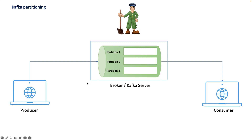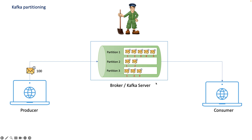In the Kafka ecosystem, once a producer sends bulk messages, they will be split into different partitions. If I send thousands of messages, each message is not guaranteed to go to the same partition — it will go to multiple partitions, depending on the number of partitions we have in our broker. Similarly, a consumer will consume from all partitions. This is the typical Kafka pub-sub mechanism.